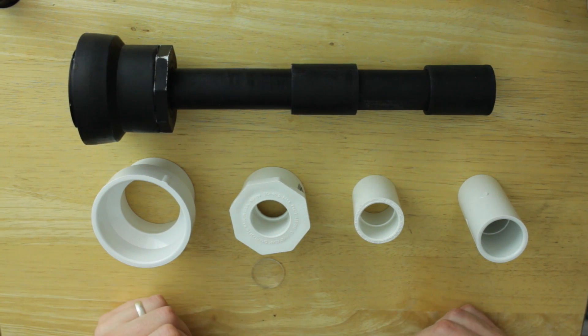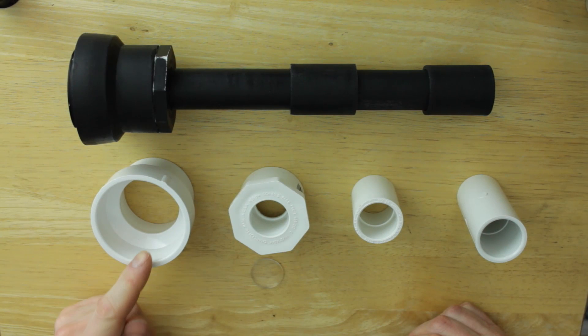Now that we have the design squared away, we can get the build finished up. The lens mount is friction fit onto the 2.5 inch to 1.5 inch reducer by heating it up with a heat gun.